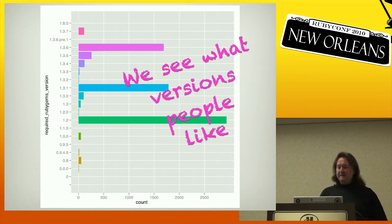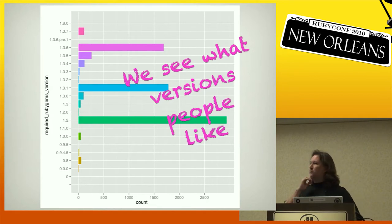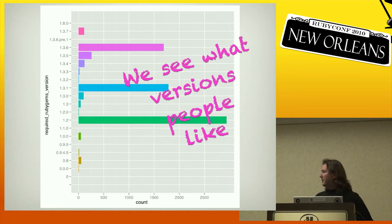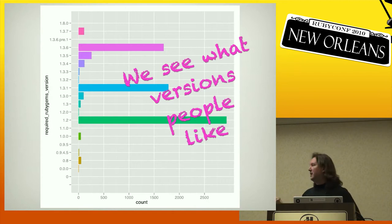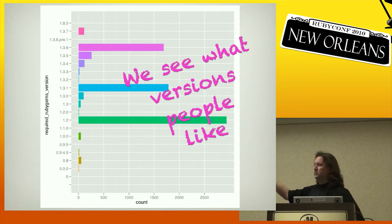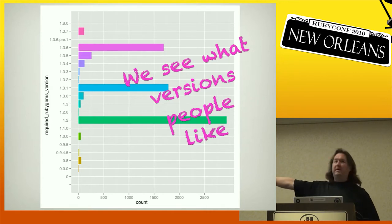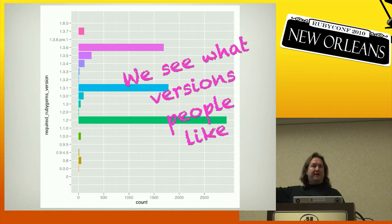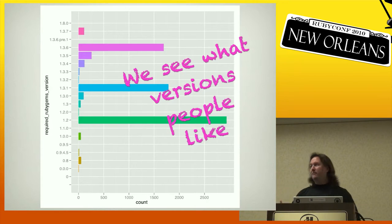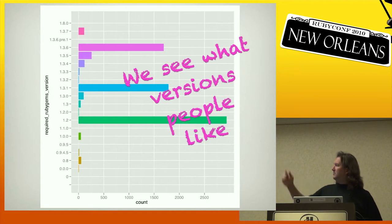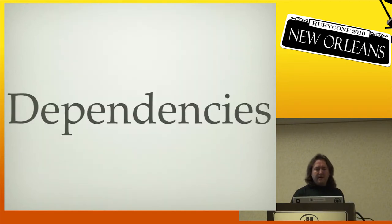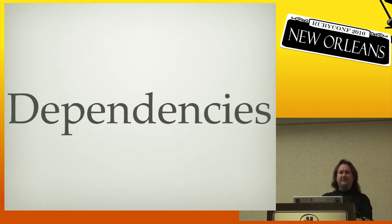Looking at the required RubyGems version — if you have code that requires a specific level of RubyGems itself. Most of this is: if you're using a development dependency, it automatically sets the required RubyGems version to at least 1.2, because development dependency was a feature added at that point. We can see people are using the nice bigger versions. That's some of the interesting data available in every gem.